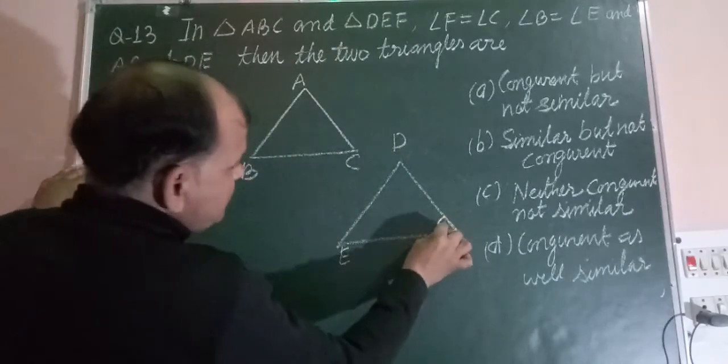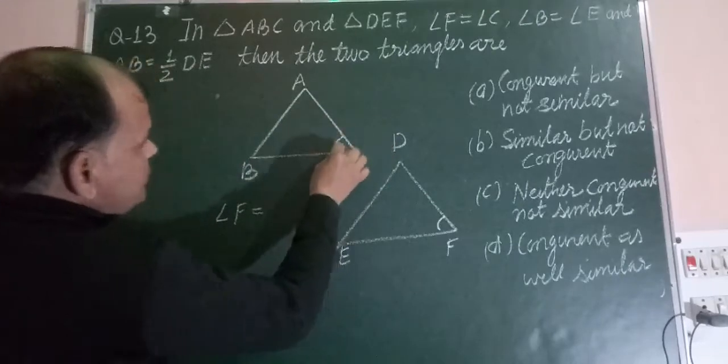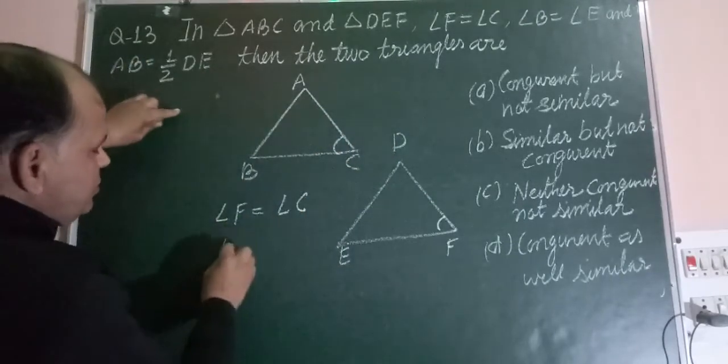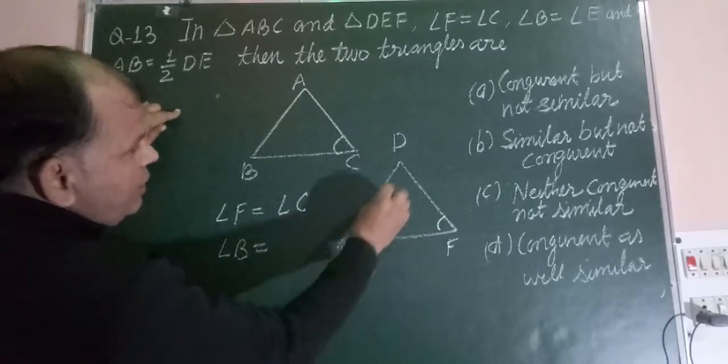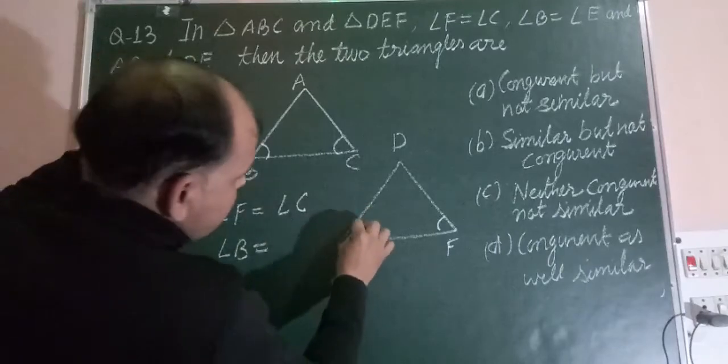And it is given to us that angle F is equal to angle C, corresponding angle. Angle B is equal to angle E.